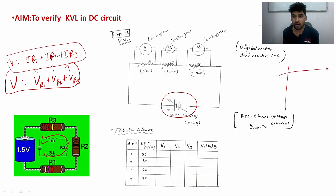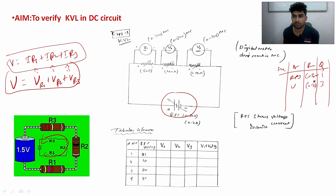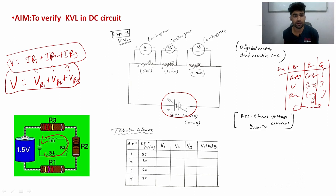Based on the circuit diagram we will make an apparatus table: serial number, apparatus, range, and quantity. RPS: range 0 to 30 volts, quantity one. Voltmeter: range 0 to 30 volts. Rheostats: 0 to 50 ohm, 100 ohm, and 150 ohm — three of each. Connecting wires as needed.